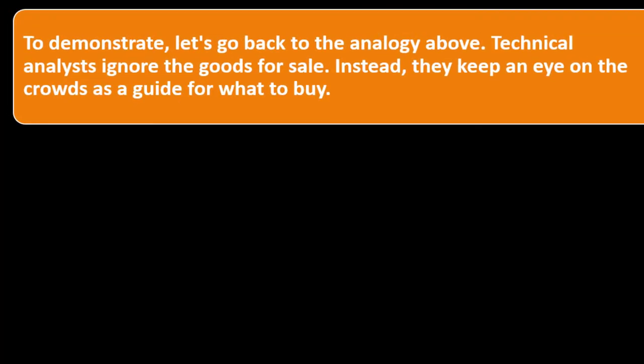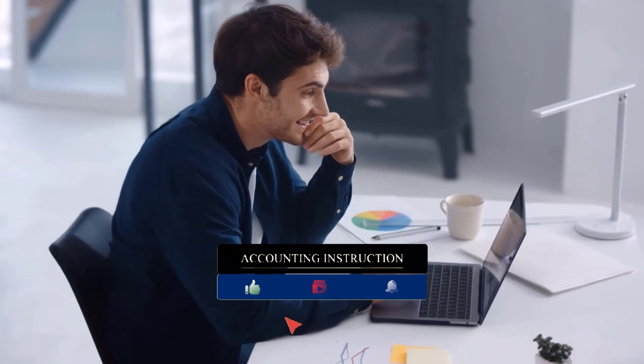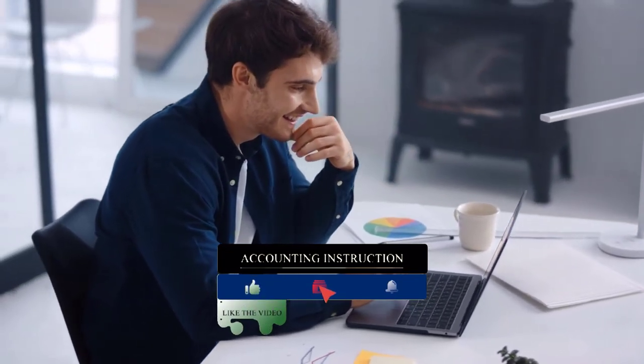To demonstrate, let's go back to the analogy above. Technical analysts ignore the goods for sale. Instead, they keep an eye on the crowds as a guide for what to buy. If a technical analyst notices shoppers congregating inside a computer shop, they will try to buy as many PCs as possible, betting that the growing demand will push PC prices higher. They're not really digging into the PC here in this analogy. They're just looking, hey, that's the popular thing, right? You're following the trends at this point in time and trying to get a pattern or see the pattern of the trends.